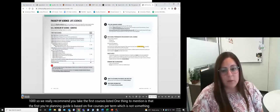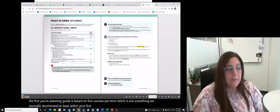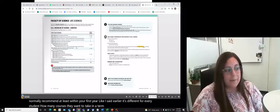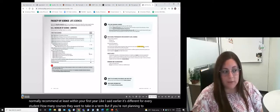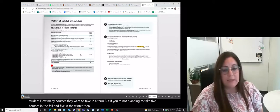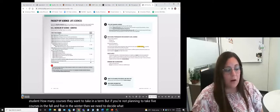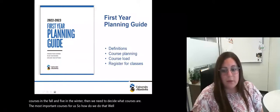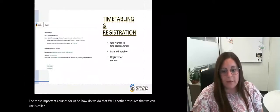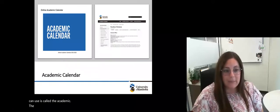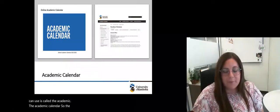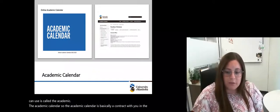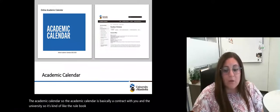As you can see here on the screen, this first year planning guide lists all the requirements that are needed and that you should be looking at taking within your first year. You'll notice in some places like for example, Math 1500, there's a few courses listed. The course that we recommend that you take is always going to be the first one listed. One thing to mention is that the first year planning guide is based on five courses per term, which is not something we normally recommend, at least within your first year. But if you're not planning to take five courses in the fall and five in the winter, then we need to decide what courses are the most important courses for us.